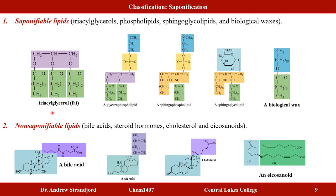Triacylglycerol molecules contain esters and are saponifiable. Glycerophospholipids contain two ester linkages; sphingophospholipids contain one amide linkage; sphingoglycolipids also contain an amide linkage; and biological waxes are esters — so all four are saponifiable lipids. The non-saponifiable lipids — those without esters or amides — include bile acids, steroids, cholesterol, and eicosanoids.